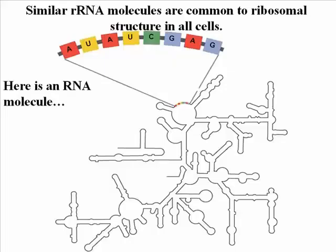In this example, ribosomal RNAs that are part of the structure of the small ribosomal subunit in different species were compared. We can see a few base substitutions found in different species in the highlighted part of the sequence.